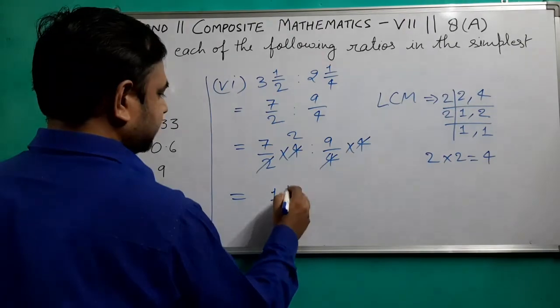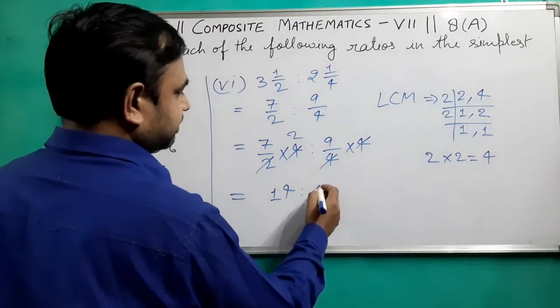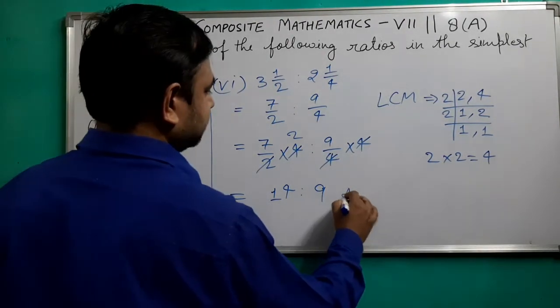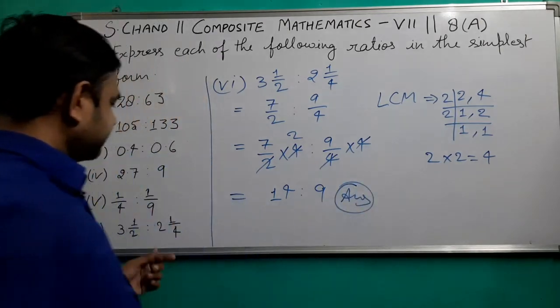Seven becomes 14 and this will be 9, so 14 ratio is 9. This will be the answer to question number 6.